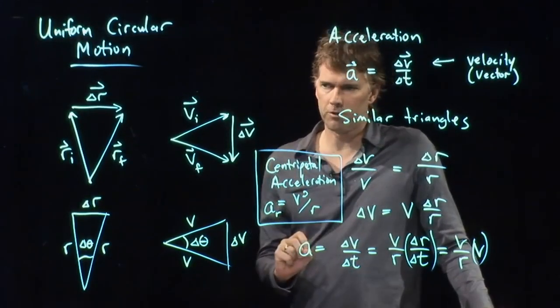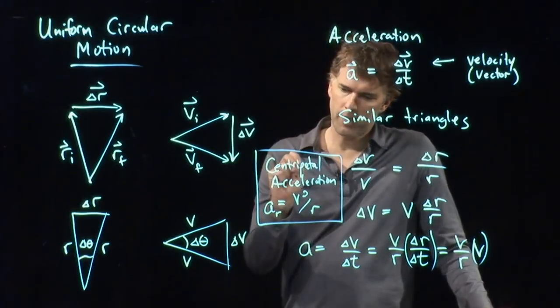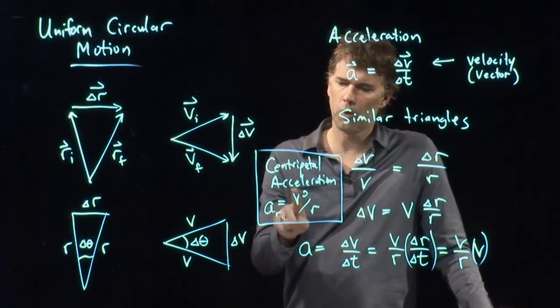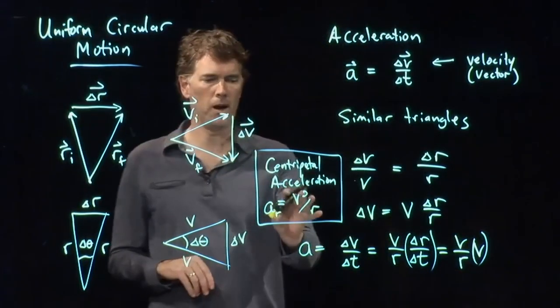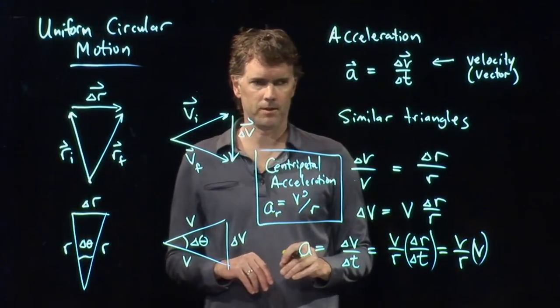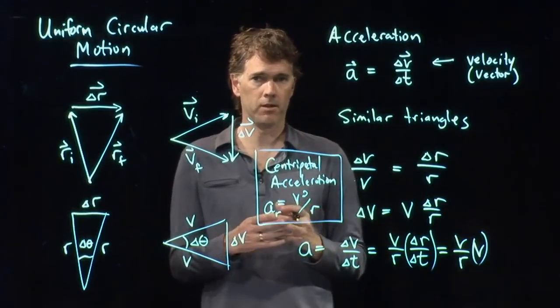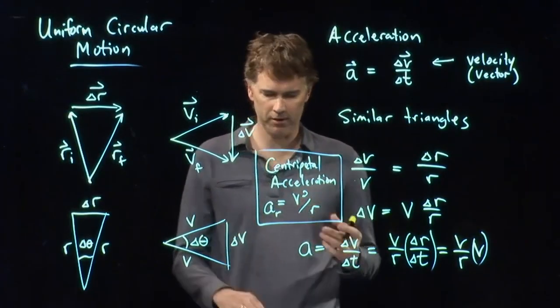But what this means is, anytime you're moving in a circle, you have a centripetal acceleration towards the center of the circle, which has this magnitude, v squared over r. That's how fast you are accelerating towards the center of the circle.